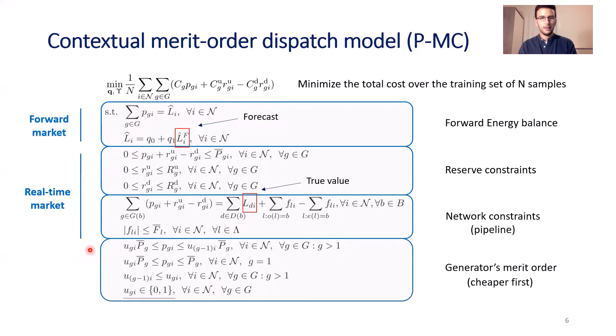We also added merit order constraints which enforce that generators should be activated based on their cost. The cheaper generators are activated first, then the more expensive ones, and so on. This is enforced through binary variables, so this problem becomes a mixed-integer linear program that can be solved with commercial solvers.